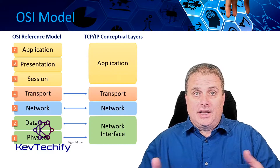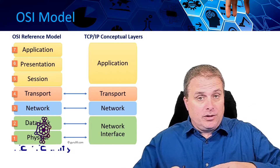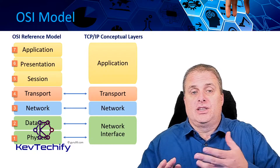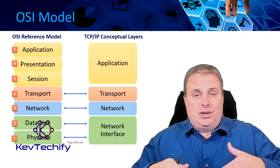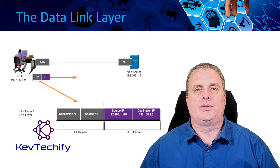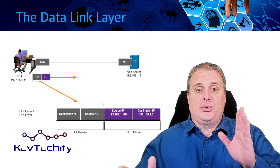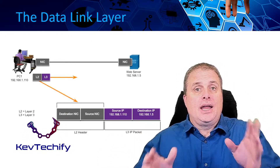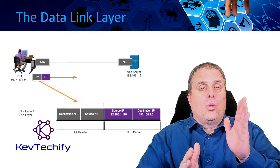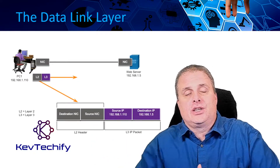As a reminder, the Datalink layer in the OSI model lives down towards the bottom. It's Layer 2, at the bottom of the OSI model. It's also included in the Network Interface layer in the TCP/IP model. The Datalink layer is responsible for communication between devices on your network — not necessarily end-to-end between your client and your web server. It's concerned with delivering data from one device to another device on your network.